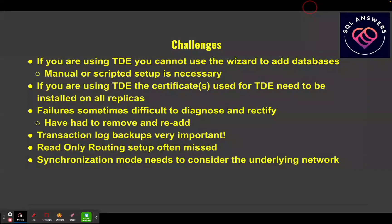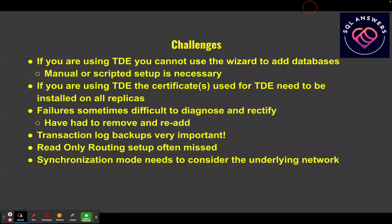Read-only routing is something that a lot of people often miss when setting up their availability groups — it's easy to miss. But if you want to be able to utilize your replicas in a read-only fashion, that's something you need to have set up. Synchronization mode also needs to be considered for the underlying network. If you're operating your availability group over a wide area network, you probably want to use asynchronous mode so you're not slowing down your primary system when transactions are being committed.